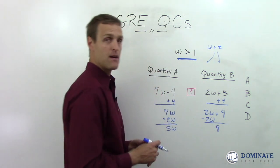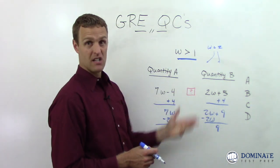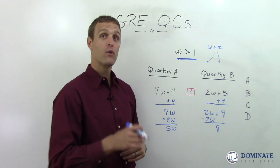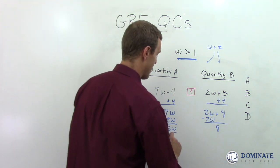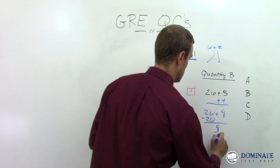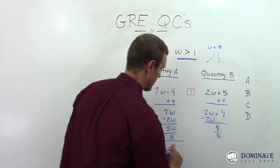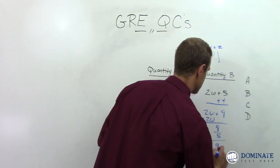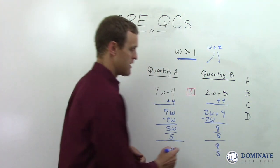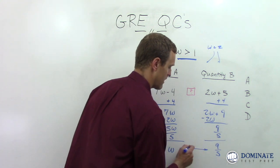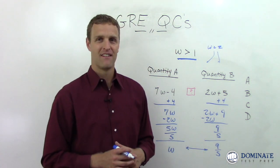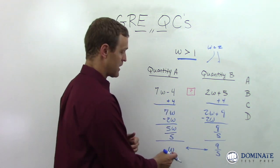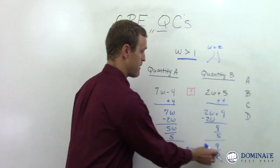Now we're getting somewhere — that's more helpful. Maybe it's even easier to plug in values for W at this point. Or we can go one step further and divide by 5. Now we've literally isolated W in quantity A, and quantity B becomes 9 fifths. So we have a very direct comparison. Visually, we're literally just evaluating W compared to 9 fifths.